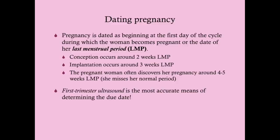An important point: when a woman says she is 12 weeks pregnant, it does not mean she conceived 12 weeks ago. It means her last period was 12 weeks ago — she probably conceived about 10 weeks ago. This is a critical distinction assuming a 28-day cycle. The most accurate means of determining the due date is the first trimester ultrasound, not just the LMP.